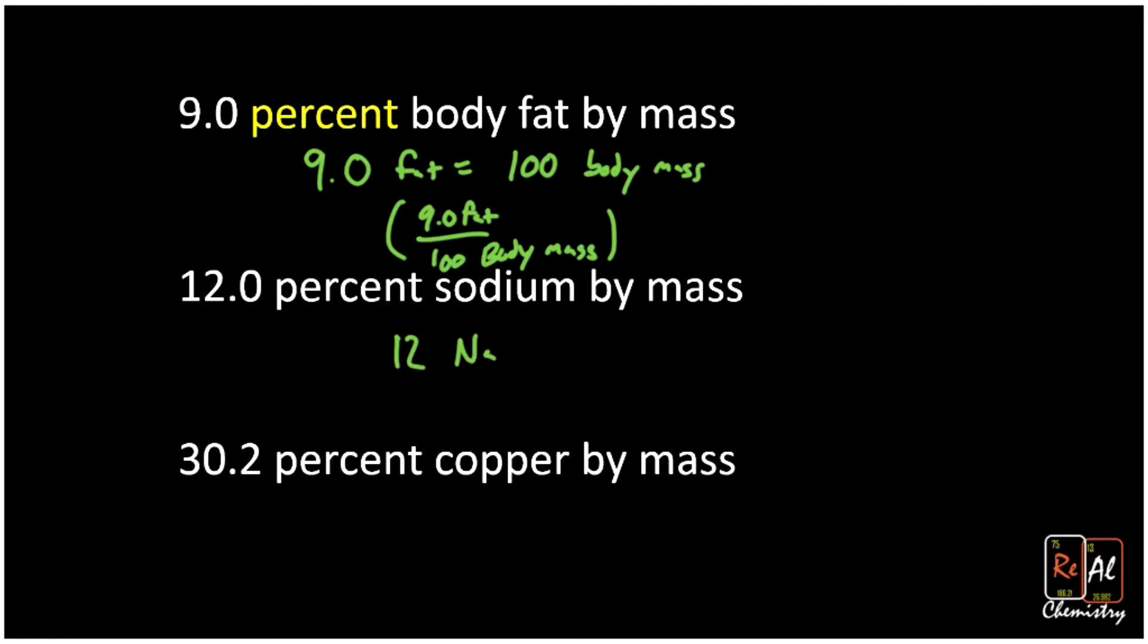Or for this example with copper—by the way, Na means sodium, I know that looks a little weird, but Na is sodium, so that's why I put Na there—you could put 30.2 copper, which turns out to be Cu, for every 100 total. Now importantly, all of these are by mass.